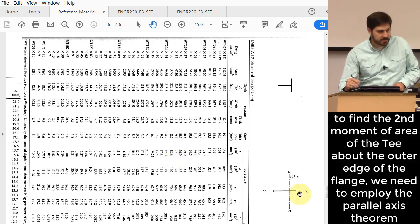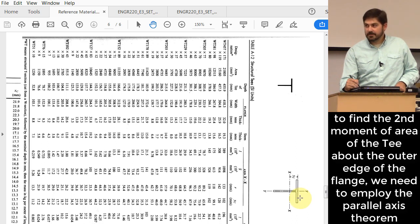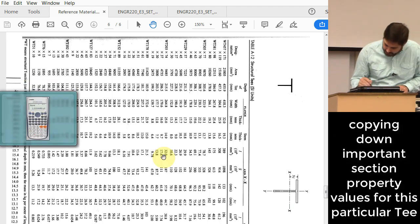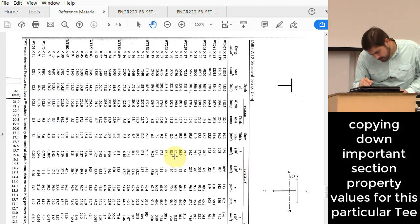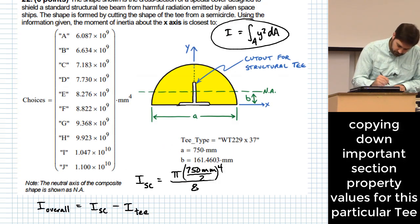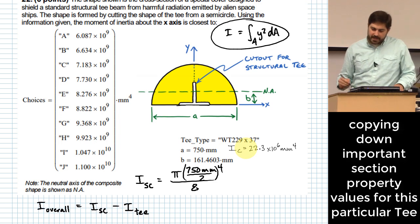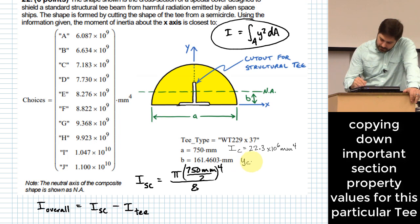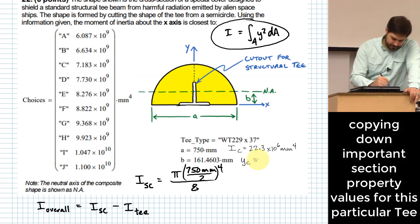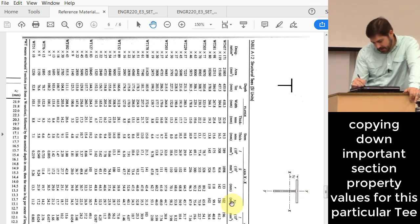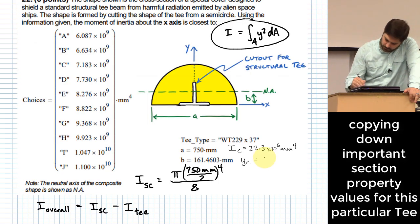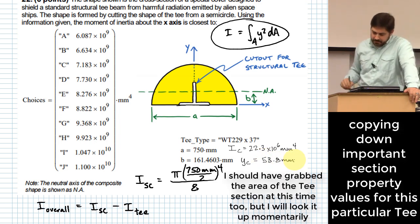So that means for me, because I don't want it around the centroidal axis, I want it around this top edge axis, I need to use some parallel axis theorem there to figure out what that is. So let me go back in here. I need to pick these values off. So 22.3 times 10 to the sixth millimeters to the fourth, this is the i about the centroid for that t shape. What's the distance difference from the centroid to that top edge? It's also given here. Y sub c for this WT229 by 37 is 53.8 millimeters.